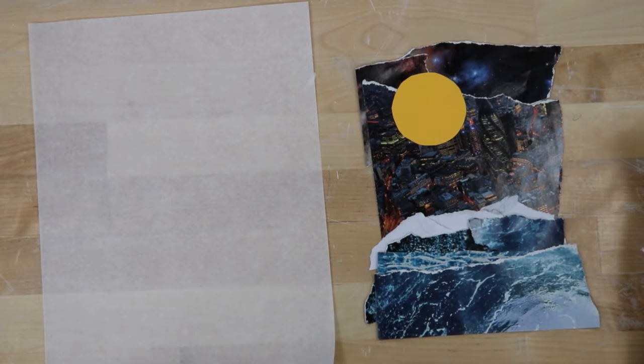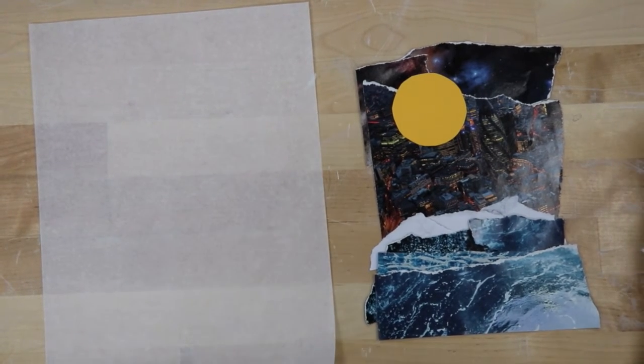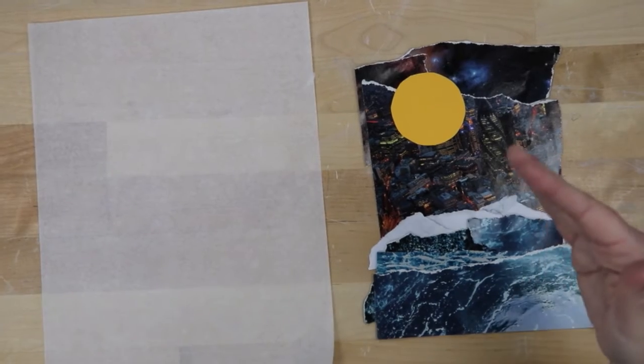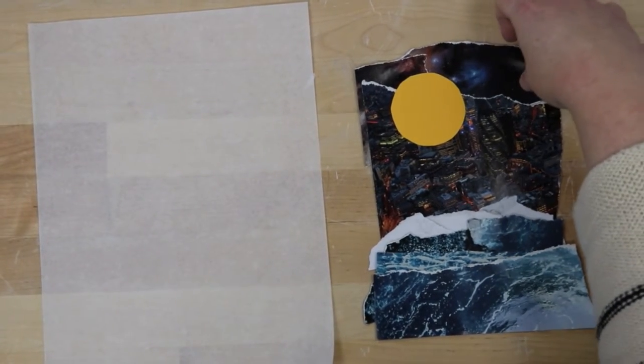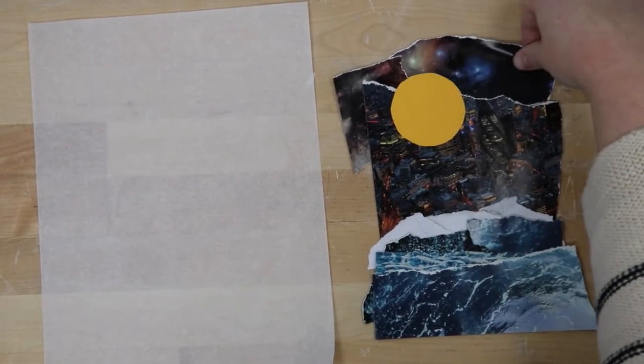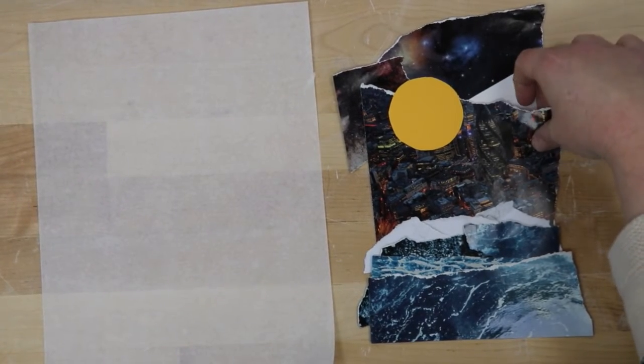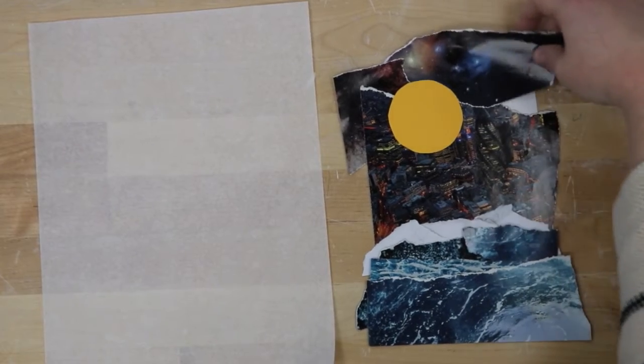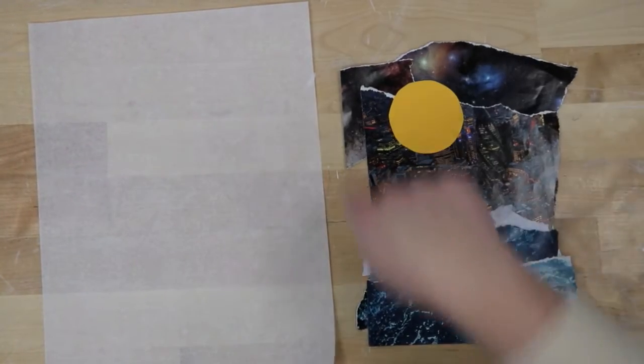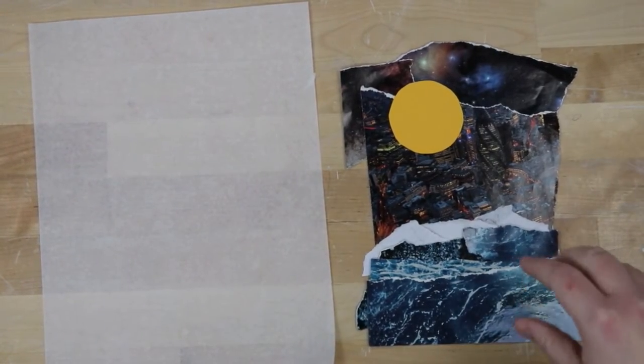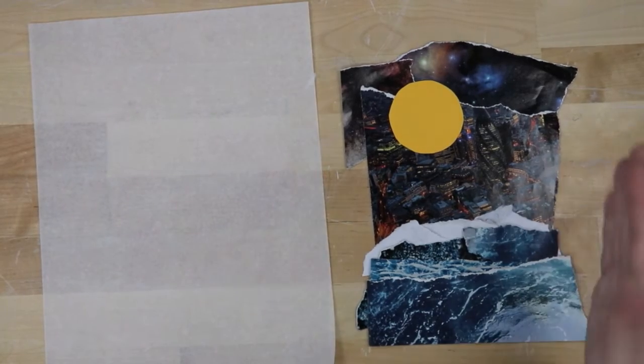Have any of you ever glued anything down? Anytime you have ever glued anything down, has it ever been perfectly in exactly the right place that you want it? Like 99% of the time, it's a little bit skewed or it's a little bit off. So having a little bit of extra space here for you to glue it a little incorrectly is really wise. Does that make sense? That's called a bleed in the art world.